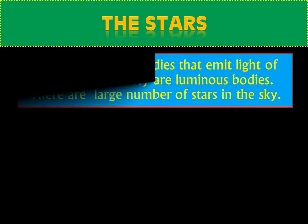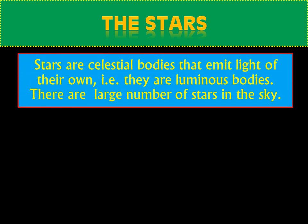Now we can discuss the main concepts given in this chapter. Stars are celestial bodies that emit light of their own. You learned in your previous classes that objects which have their own light are called luminous objects or luminous bodies. So, stars are luminous objects.